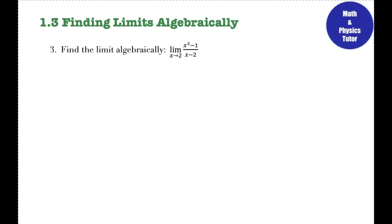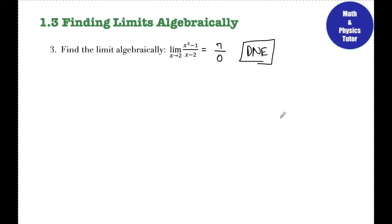Number 3: the limit as x approaches 2 of (x³ − 1) over (x − 2). I always have to plug in that number first. Plugging in 2: 2³ − 1 = 7 in the numerator, and 2 − 2 = 0 in the denominator. This is the case where I have a number over 0, so the limit does not exist. This is a DNE limit.